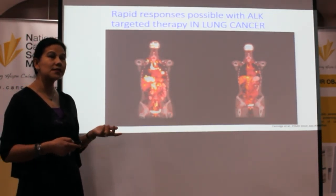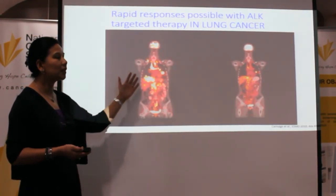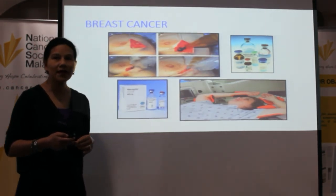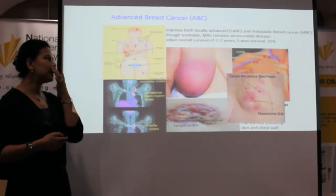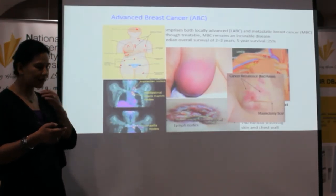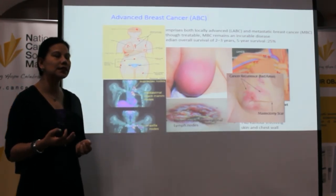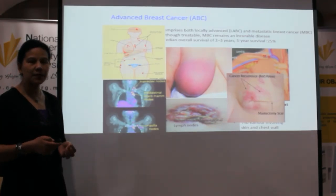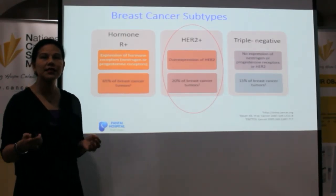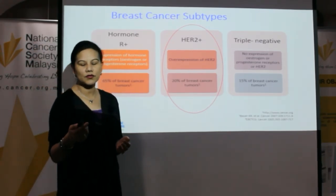ALK-positive lung cancer is another targetable mutation in lung cancer where patients also get very rapid responses. For breast cancer, there have been many advances in treating advanced breast cancer. We classify patients by subtype — HER2-positive, ER-positive/HER2-negative, or triple-negative — and tailor treatment accordingly. Advanced breast cancer is difficult to treat and survival has historically been poor.